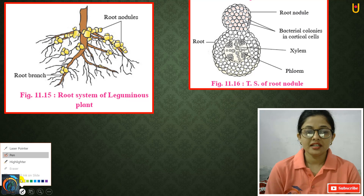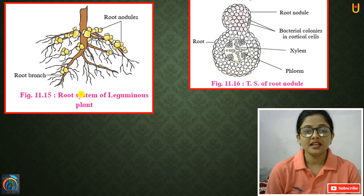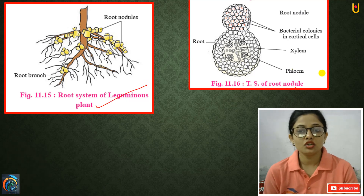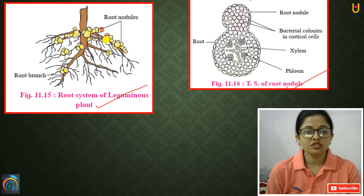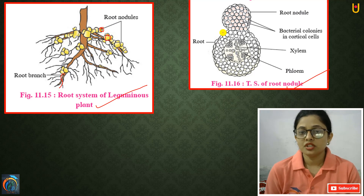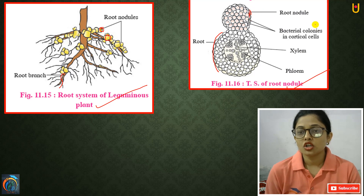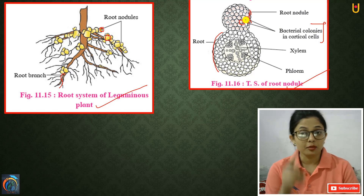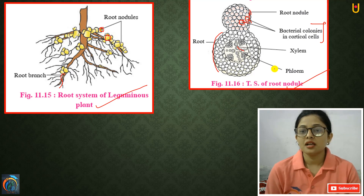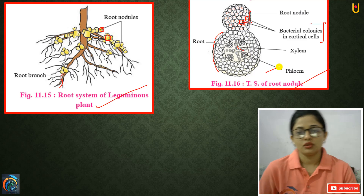Here is a diagram of a leguminous plant showing root nodules. You can see the branched root with multiple root nodules. Within the root nodule are bacterial colonies and cortical cells. The cortical cells contain the Rhizobium bacteria, along with xylem and phloem.